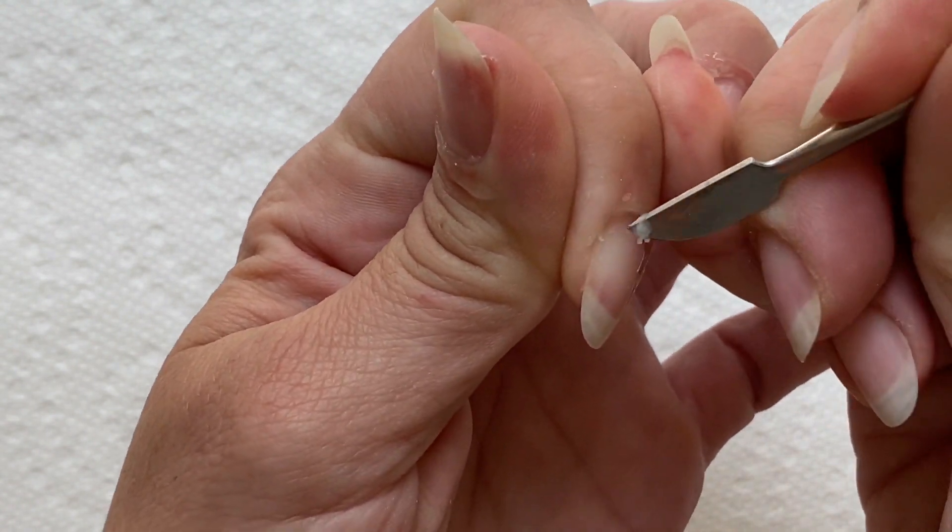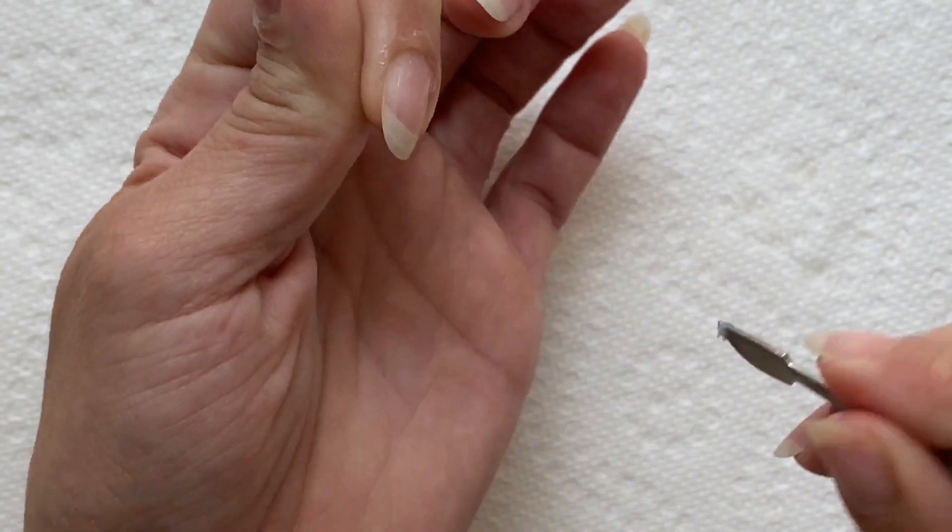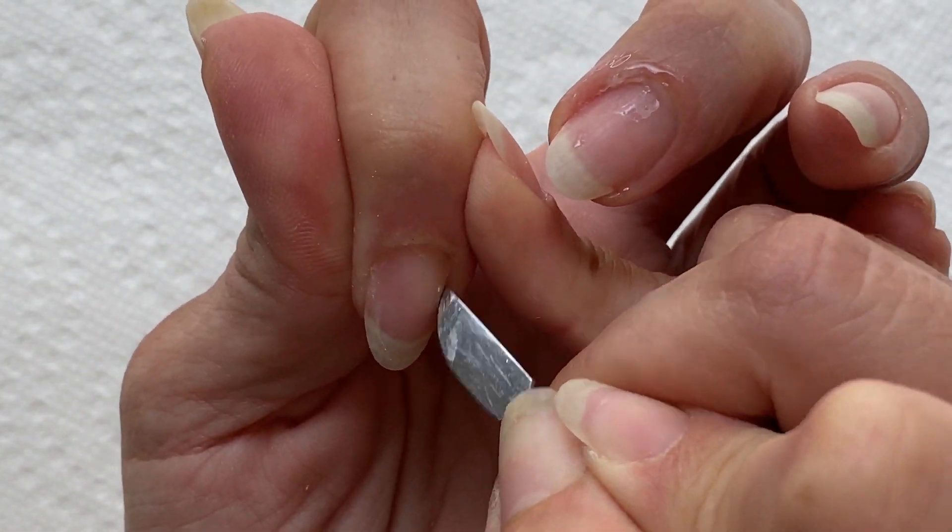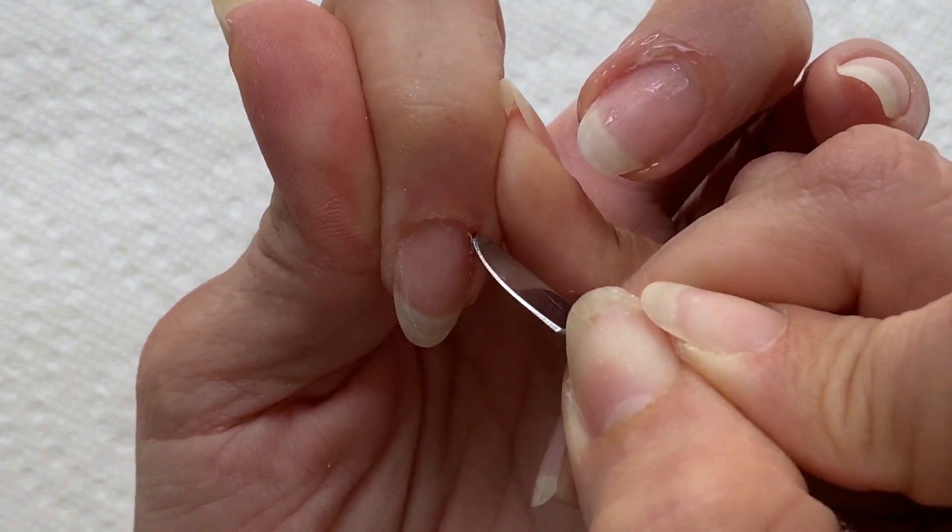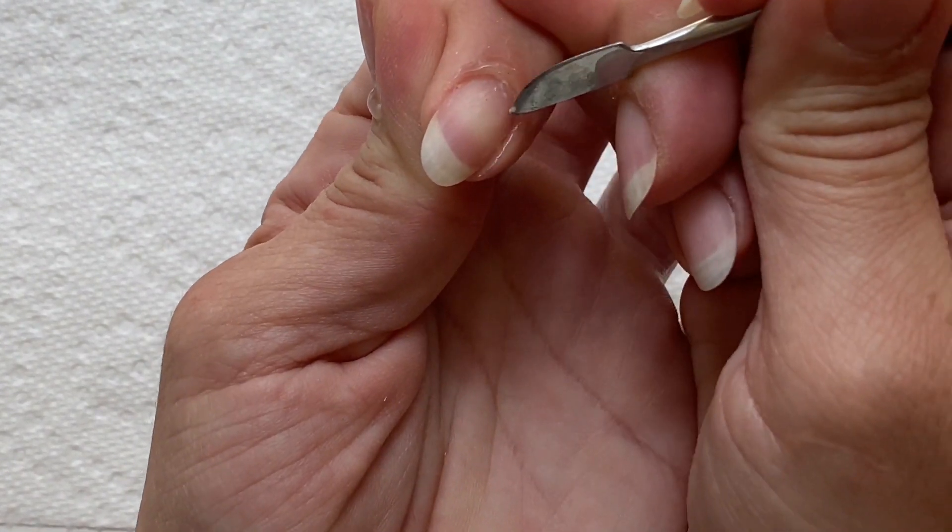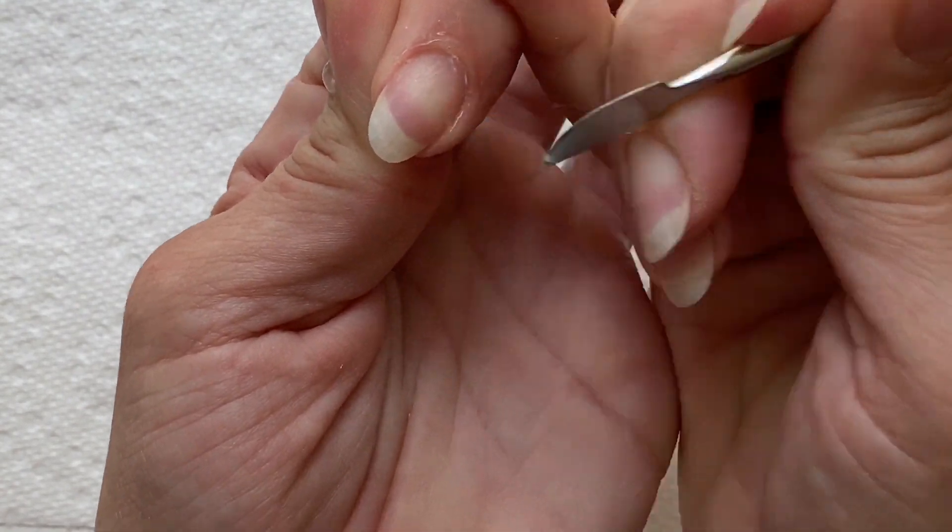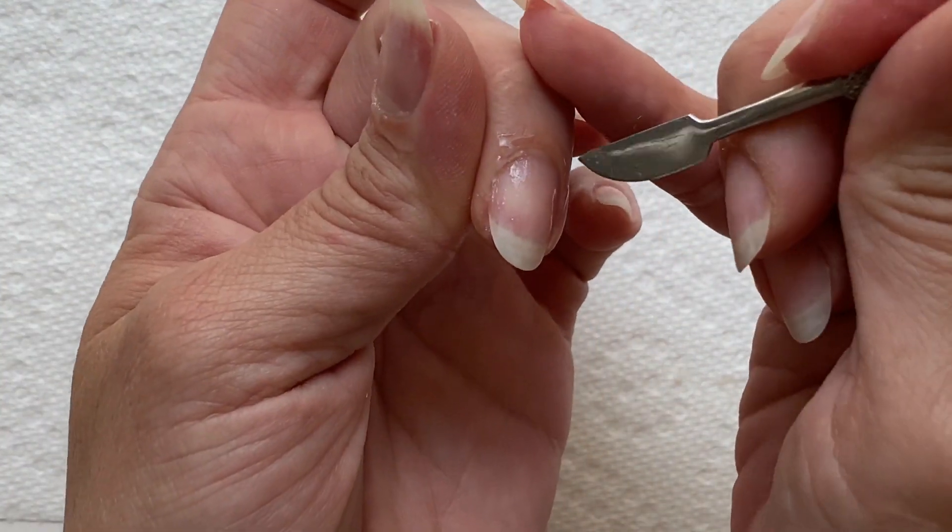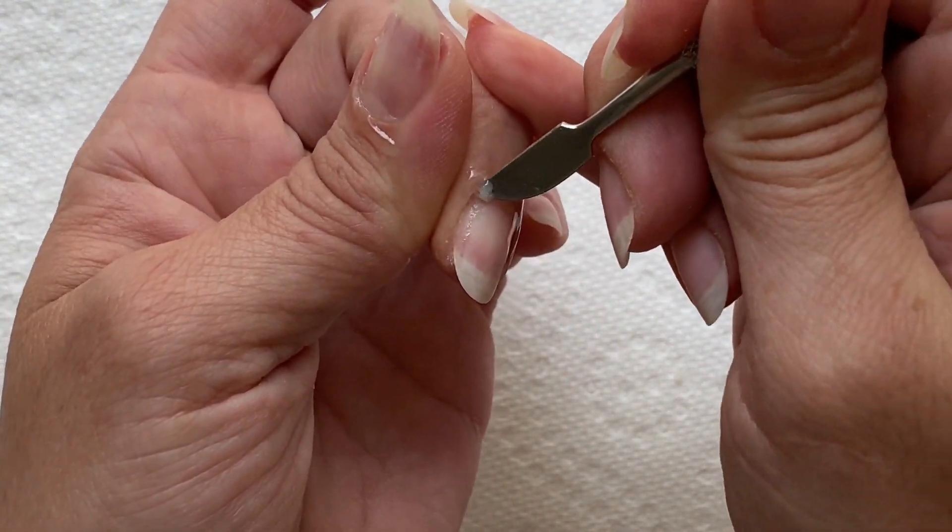I do understand some people have harder cuticles or bigger cuticles, but what's really important about this step, and this is something you should be doing on a regular basis anyways, is that it's going to help promote nail growth. It's going to help promote cuticle health. The more you push it back, the less it grows out, the less dry it gets and excessive, and it's definitely going to keep your nails looking nice and clean.